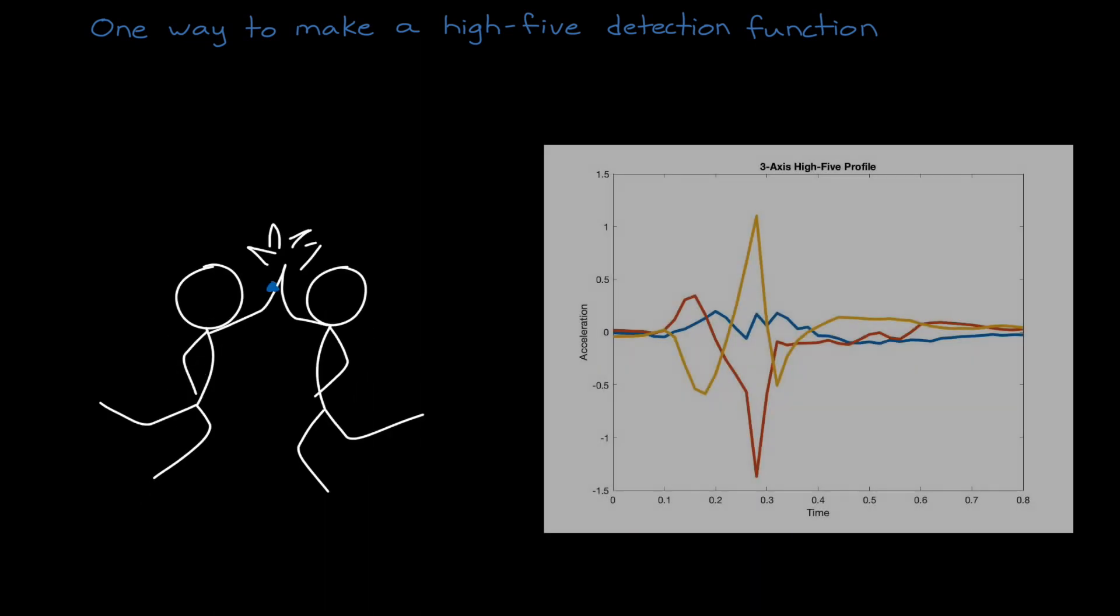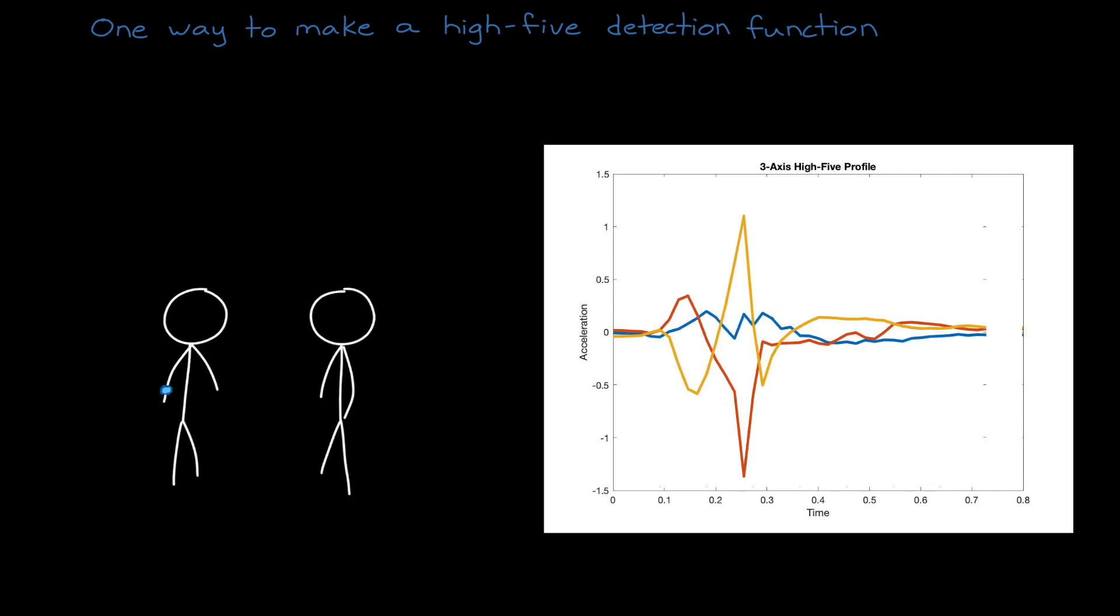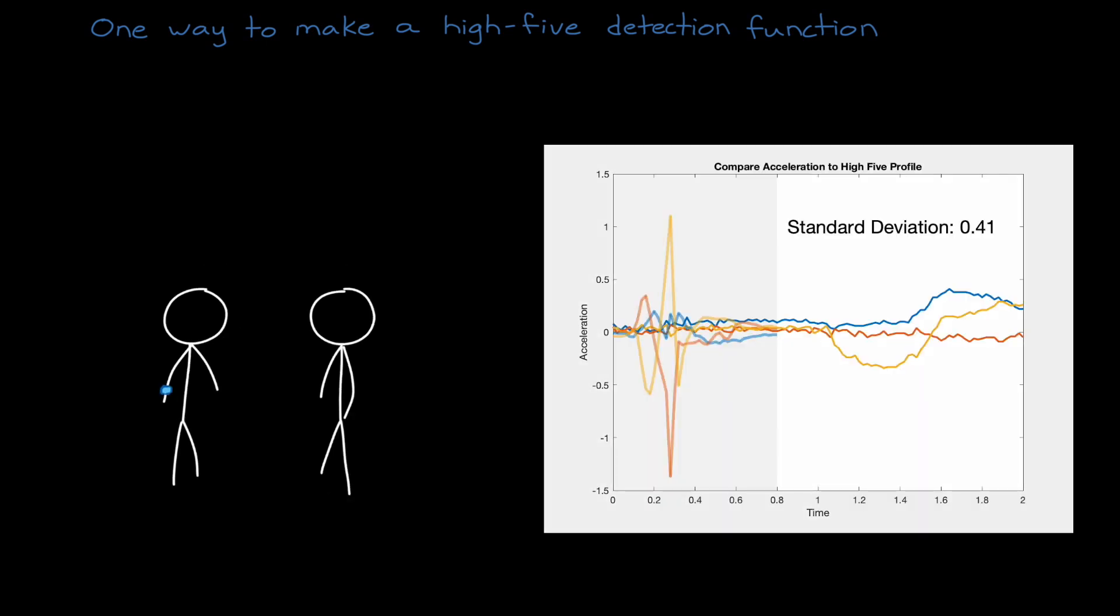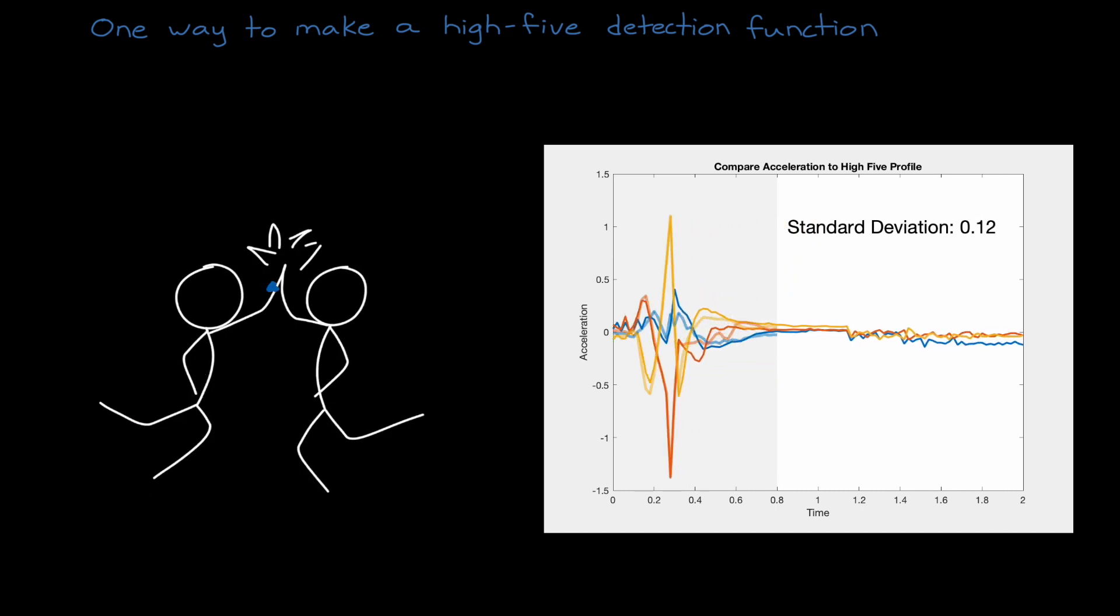Here is one example of how we might use a rule-based approach to design this function. Ahead of time, we could record the acceleration of a person performing a high-five. We can label this particular acceleration profile as a high-five, since we purposefully set up the test to produce this data. Now we can use this labeled data to come up with a representative profile that we could pattern match against the continuous stream of acceleration measurements from the sensor. Our function could look at the standard deviation between the two signals, which is hovering around 0.4 for non-high-five motions. We could claim that there was a high-five when the deviation drops below some threshold.